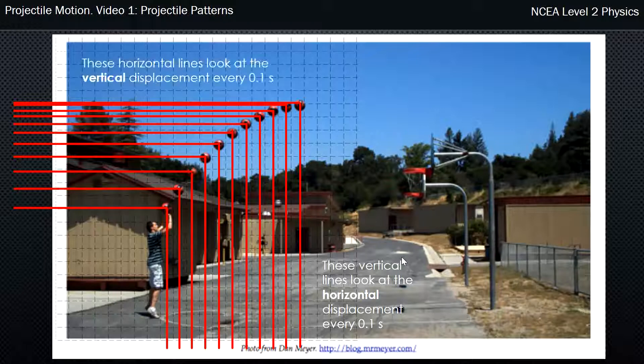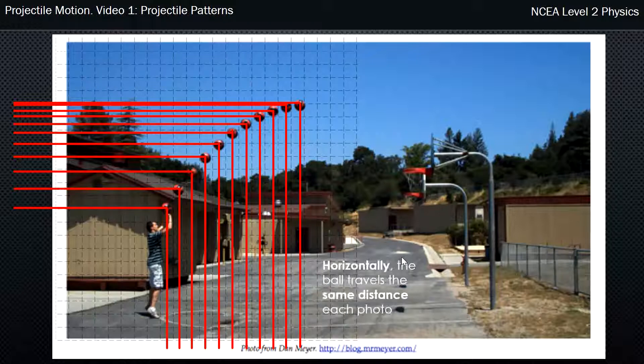And the lines that we drew acrosswards, they actually are looking at the vertical, how far the ball's going up, if we look at the gaps between those every 0.1 of a second. And so what do we notice with those gaps? Well, the horizontal gaps, the ball travels the same distance. Those gaps are basically the same size gap every 0.1 of a second. So that tells us that horizontally, the ball's traveling at a constant velocity.